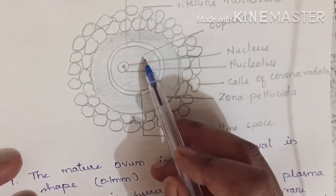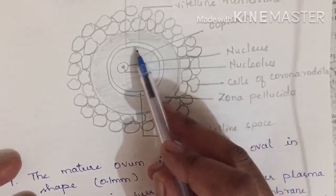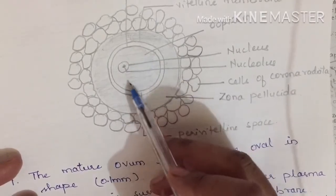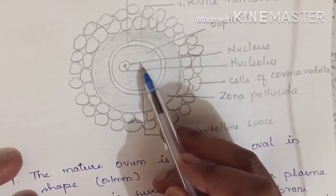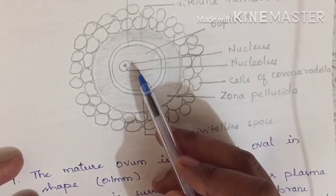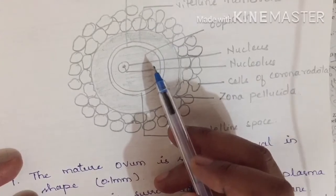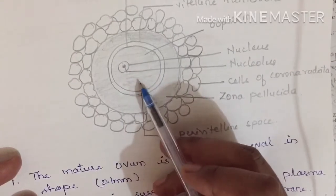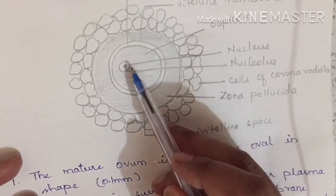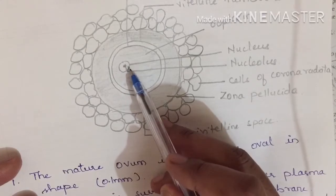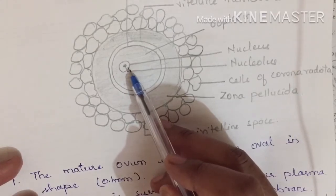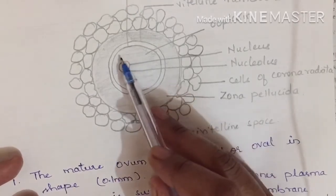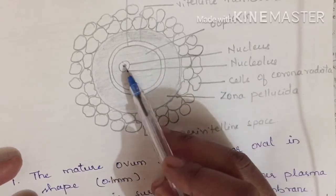In the ooplasm there will be a presence of cell organelles — like mitochondria, Golgi complex, endoplasmic reticulum, and other organelles — similar to a normal cell. The nucleus contains a nucleolus and is haploid, meaning it consists of a haploid number of chromosomes, that is 23 chromosomes. The ooplasm is surrounded by the plasma membrane.